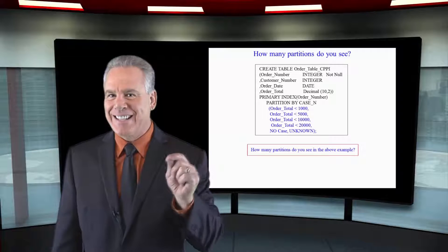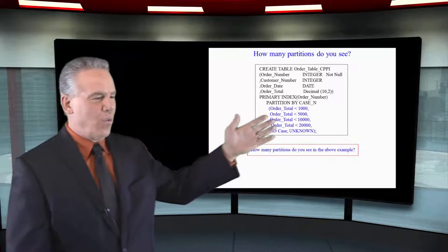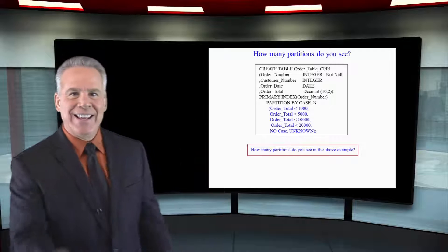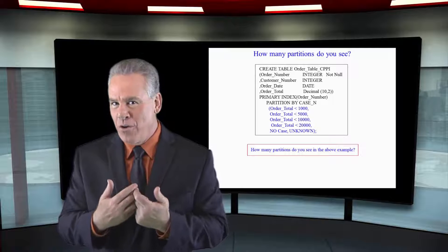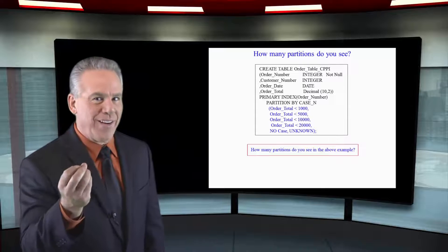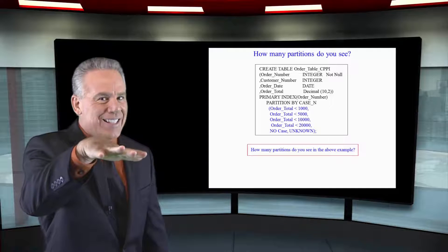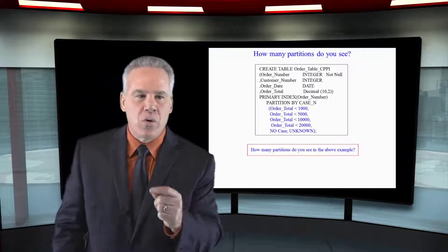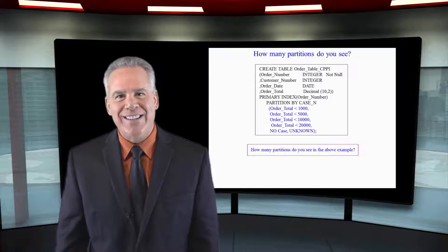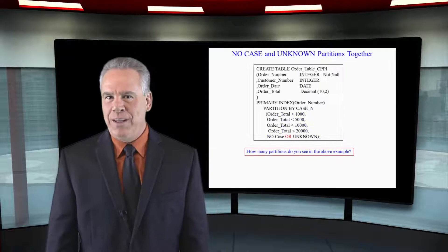There are six partitions in this example. Less than 1, less than 5, less than 10, less than 20. Then there's the no case partition. That means the order total was greater than 20,000 or equal to. It fell through the case statement and that's where those rows will go. And then, of course, there's the unknown partition in case the order total is null. Be smart.